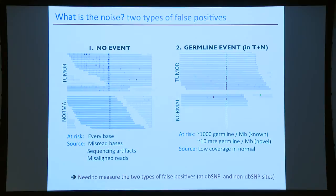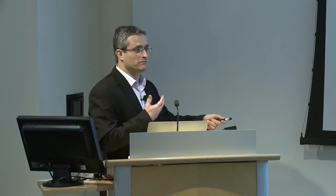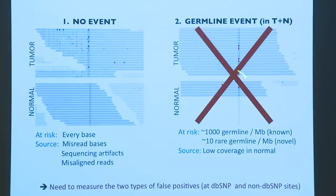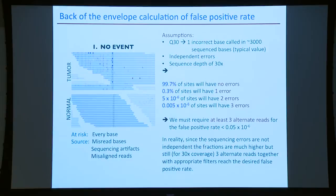Regarding the second type of error — calling a germline event somatic — we want to find all somatic events and distinguish them from germline. Some germline events could also be important and we will analyze the germline separately, but calling a germline event somatic is a mistake we want to avoid. Since we typically cover the normal well, we can control very well against having these mistakes — the sequencing noise false positives are the most common mistakes we make.